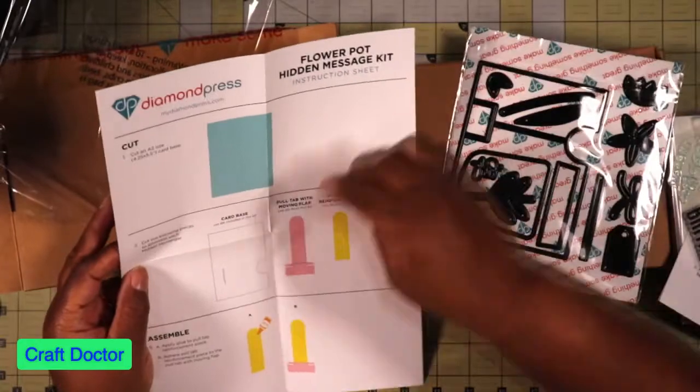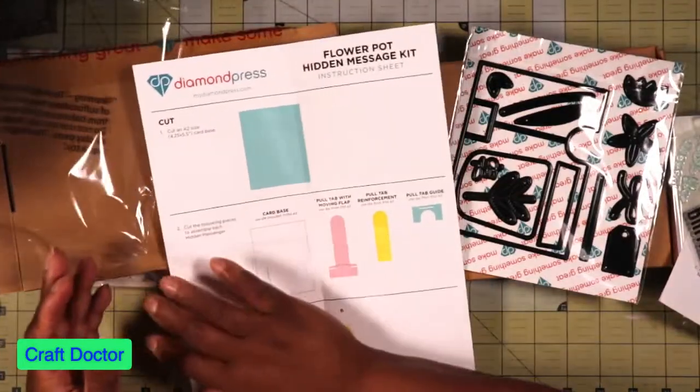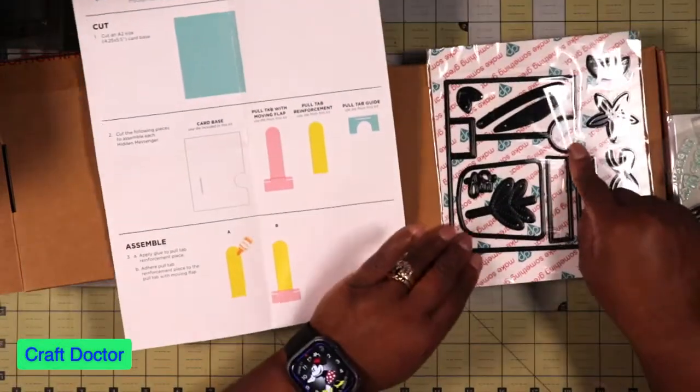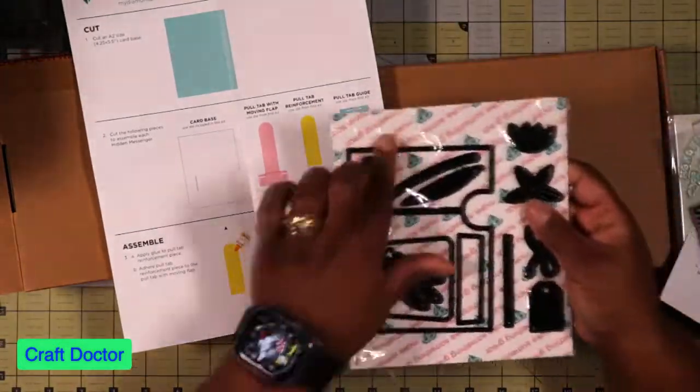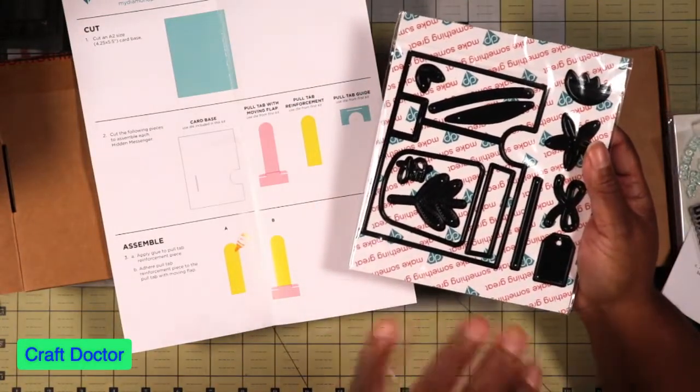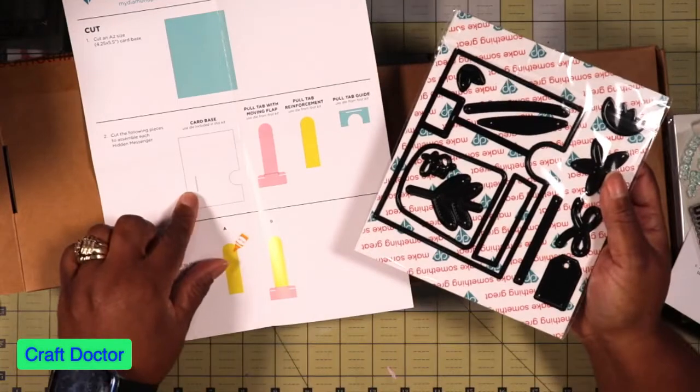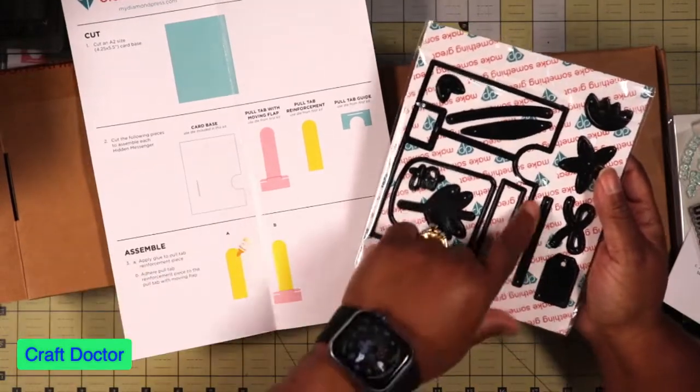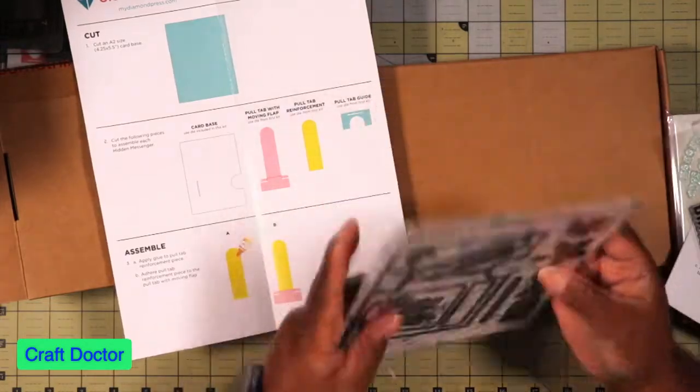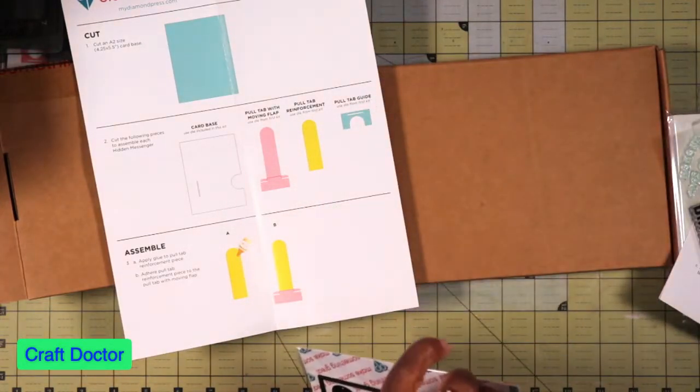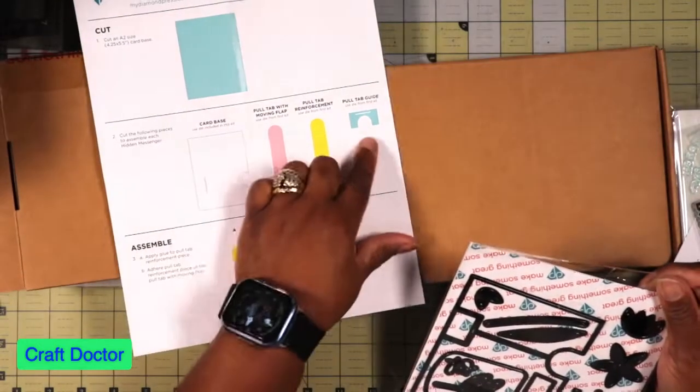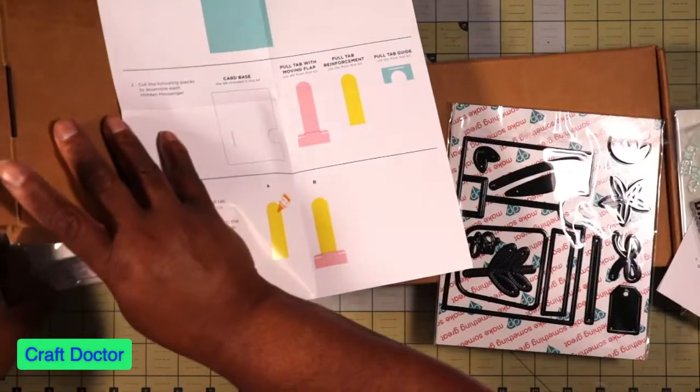Another card base, use die included in this kit, use die from the first kit. This die is specific to the flower pot kit. If you see it, it has this piece here, so that's what I think this is. Let's cut it and see, then I can stop speculating what it is.